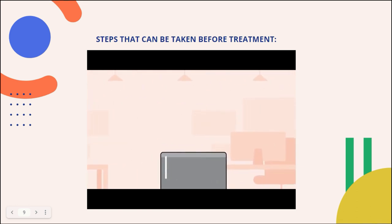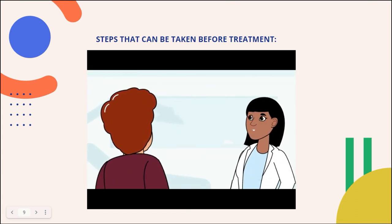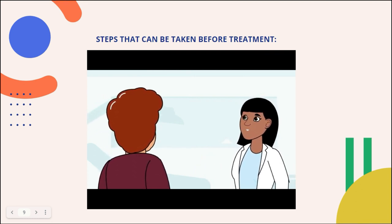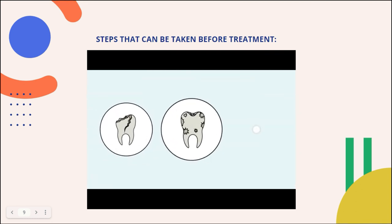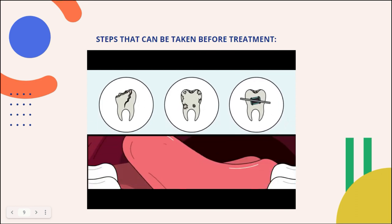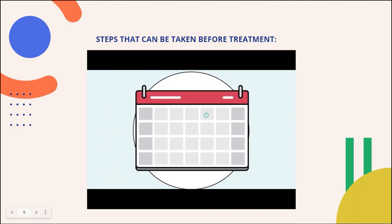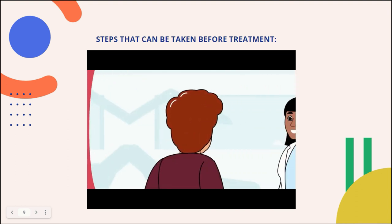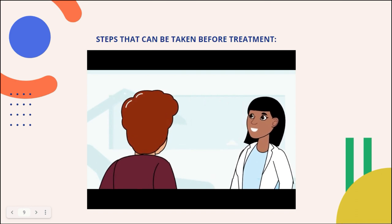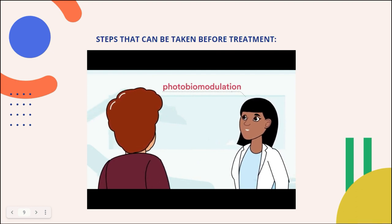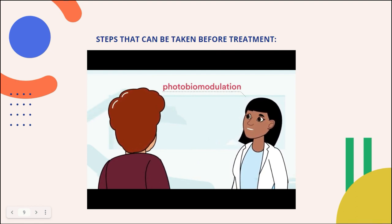There are steps you can take before beginning cancer treatment to help reduce your risk or recover more quickly. First, stop smoking or using tobacco products. See a dentist experienced in working with cancer patients to ensure your teeth and dental appliances are in good shape, as broken, sharp, or damaged teeth and poor-fitting dentures can worsen or promote mouth sores. Any needed dental work, including cleanings and fillings, should be completed four to six weeks before starting treatment. Ask your doctor about medications that may reduce the risk of oral mucositis, and your doctor may also recommend photobiomodulation therapy, a type of light therapy that may reduce the severity or duration of mouth sores.